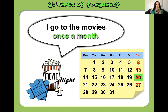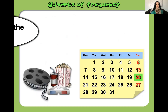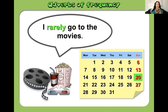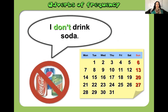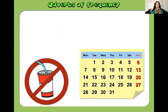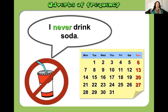What about this one? 'I go to the movies once a month' — only once a month. Or we could say 'I rarely go to the movies.' And 'I don't drink soda' — the frequency adverb would be 'I never drink soda.'